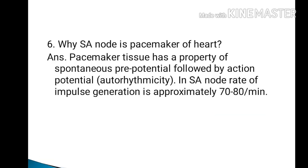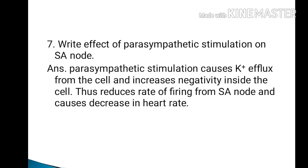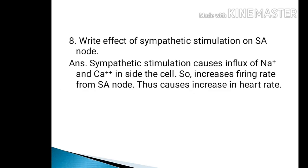Why is the SA node the pacemaker of the heart? Pacemaker tissue has the property of spontaneous pre-potential followed by action potential. In the SA node, the rate of impulse generation is approximately 70 to 80 per minute. Parasympathetic stimulation causes potassium efflux from the cell, increases negativity inside the cell, and thus reduces the rate of firing from the SA node, causing a decrease in heart rate. Sympathetic stimulation causes influx of sodium and calcium inside the cell, increases the firing rate from the SA node, and causes an increase in heart rate.